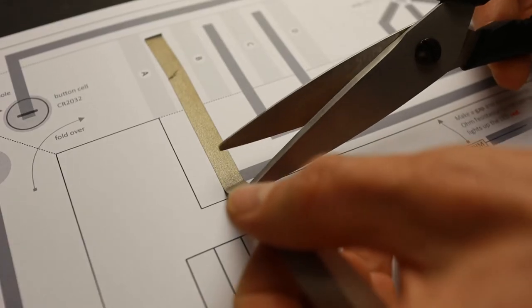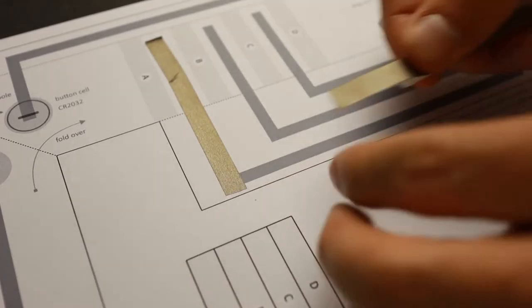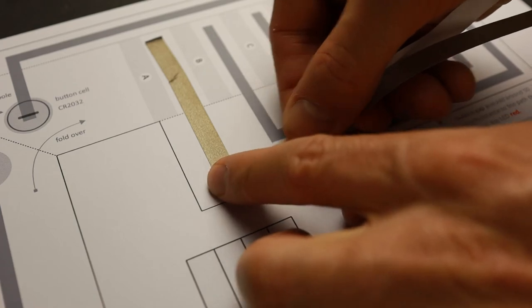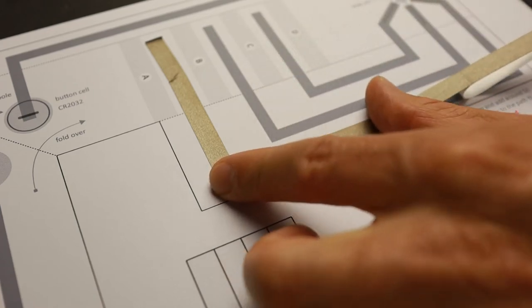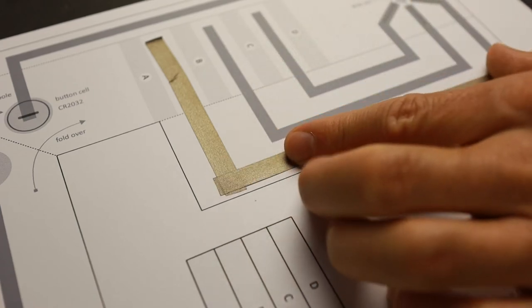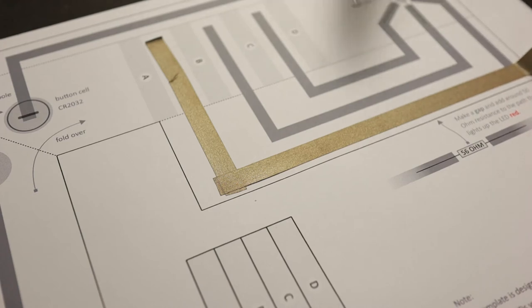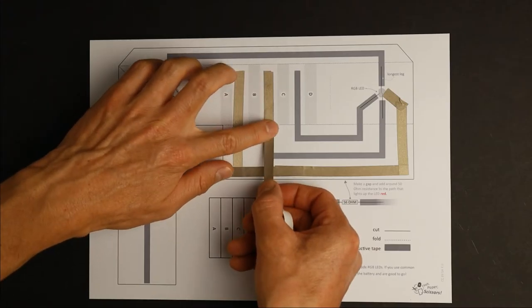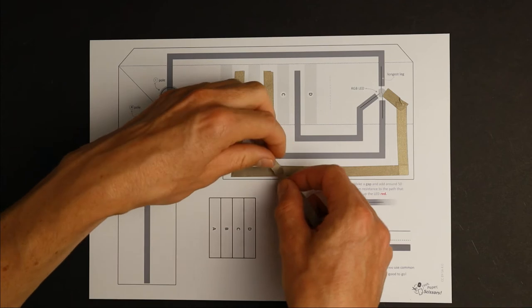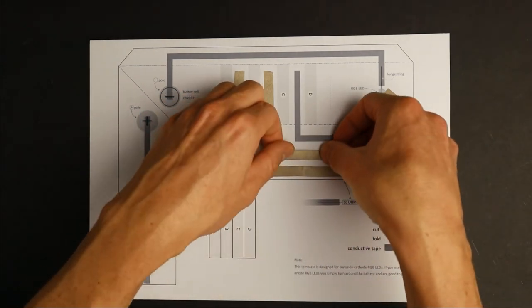For corners in your tracks you can use one of the following methods. You can simply attach two overlapping strips in a corner. But this method only works with conductive tape that has conductive adhesive like the one I use. Or you just glue the tape around the corner even if it looks messy.